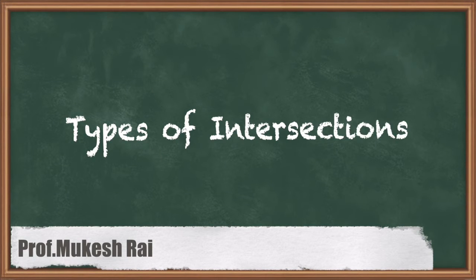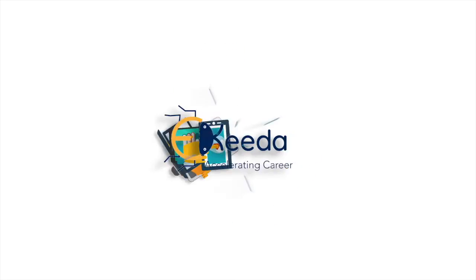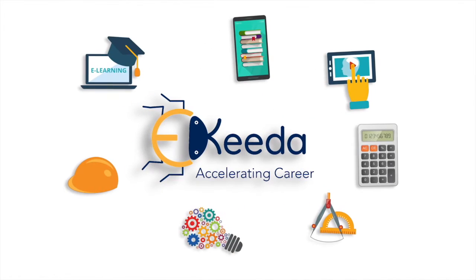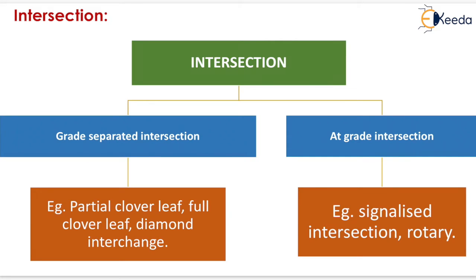Hello students, today we are going to study Types of Intersection. We subdivide intersections into two parts: the first is grade separated intersection and the second is at-grade intersection. Examples of grade separated intersections are partial cloverleaf, full cloverleaf, and diamond interchange. Examples of at-grade intersections are signalized intersection and rotary.